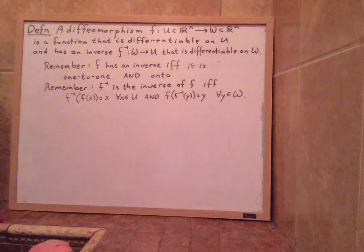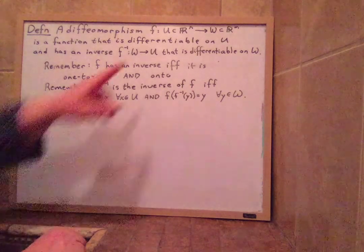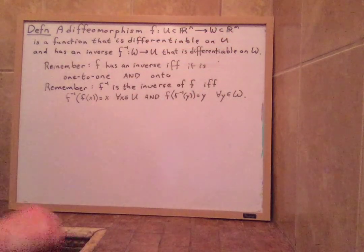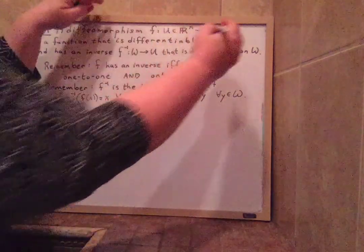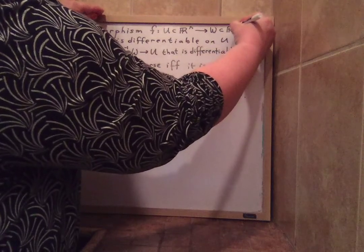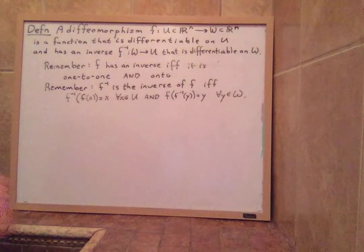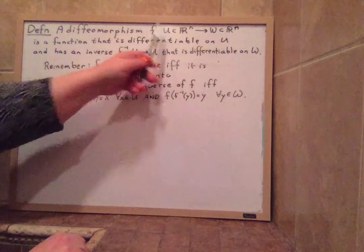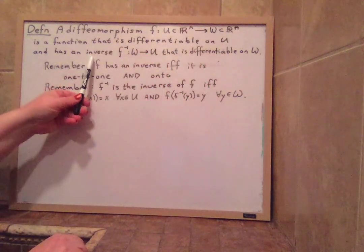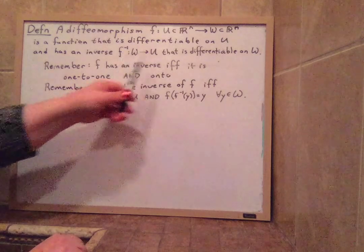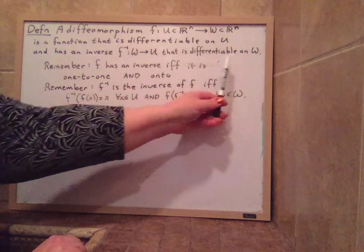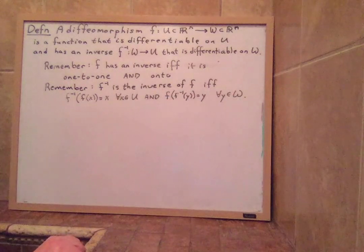A diffeomorphism is a function F that goes from an open set in R^n to another open set in R^n. This will be the same dimension here. It's a function that is differentiable at every point inside U and has an inverse, F inverse, which goes backwards from W back to U, that is differentiable on W at every single point.